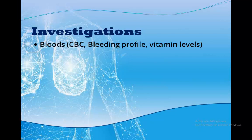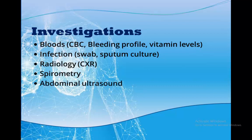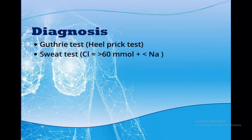A CBC will show a raised white blood cell count due to infection. There will be an abnormal bleeding profile due to vitamin K deficiency. Sputum culture can be done if signs of infection are present. Chest X-ray can look for bronchiectasis or pneumothorax. Spirometry will show an obstructive picture. Abdominal ultrasound can detect fatty liver or pancreatitis. Most babies born in the UK are tested for cystic fibrosis at birth via the Guthrie test using a heel-prick sample. If positive, the next step is the sweat test and CFTR gene test to confirm the diagnosis. The sweat test is the gold standard and must be positive on two separate occasions. If the Guthrie test is negative, the next step is either the sweat test or gene testing.